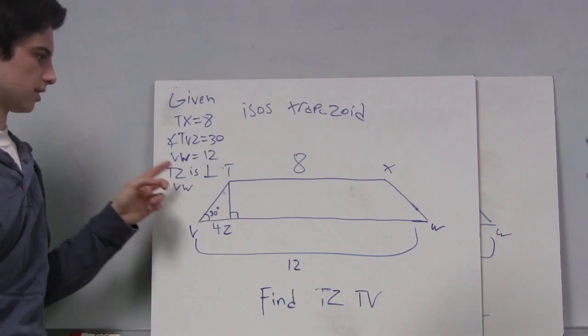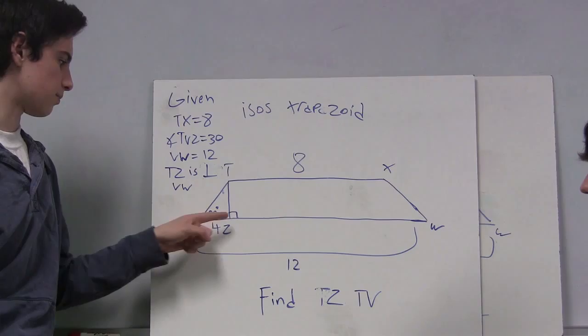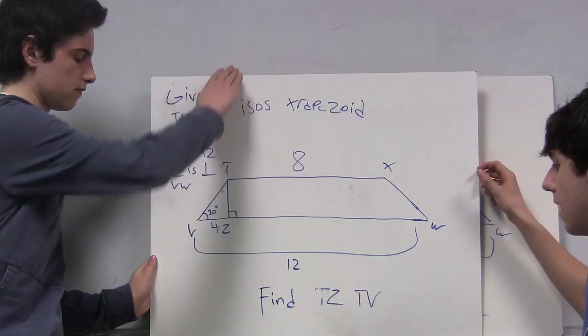Here we have an isosceles trapezoid. The givens are TX is 8, angle TVZ is 30 degrees, VW is 12, and TZ is perpendicular to VW. We are trying to find TZ and TV.